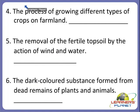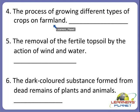Now the next one: the process of growing different types of crops on farmland — what is it called? We studied about this in the lesson. In this process, different types of crops are grown on farmland so that the soil has time to recover the minerals that the previous crop has already used. Yes — it is called crop rotation. Always remember that in this process different types of crops are grown on the farmland.